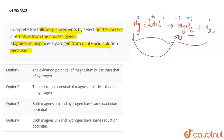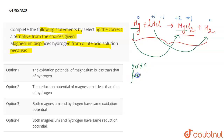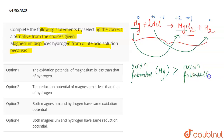Magnesium is getting oxidized from Mg⁰ to Mg²⁺, whereas hydrogen is getting reduced from +1 to 0. Since magnesium is getting oxidized to Mg²⁺, it has a tendency to oxidize itself. Therefore, the oxidation potential of magnesium is greater than the oxidation potential of hydrogen.